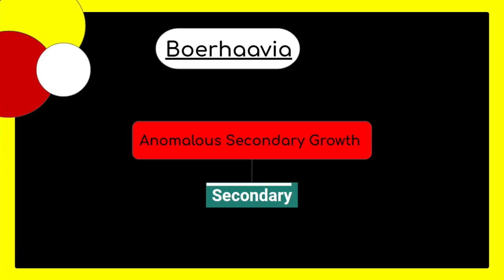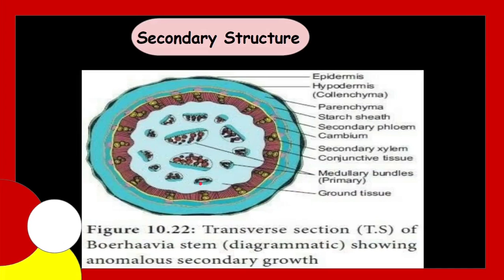So, in Boerhavia, there is abnormal position of cambium with abnormal activity and formation of successive rings of cambia which develop either in the form of concentric rings or segments. The primary structure of Boerhavia is as normal structures and the secondary structure is with abnormal secondary growth.